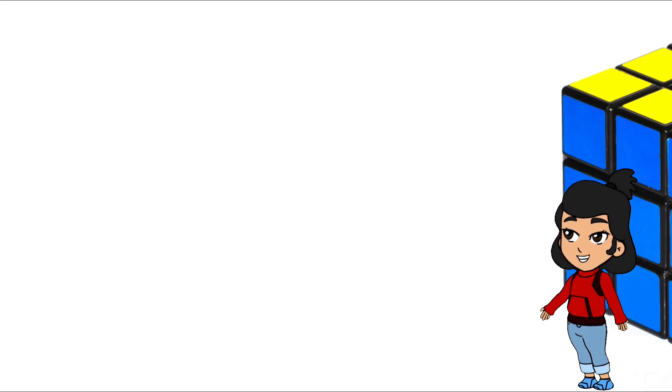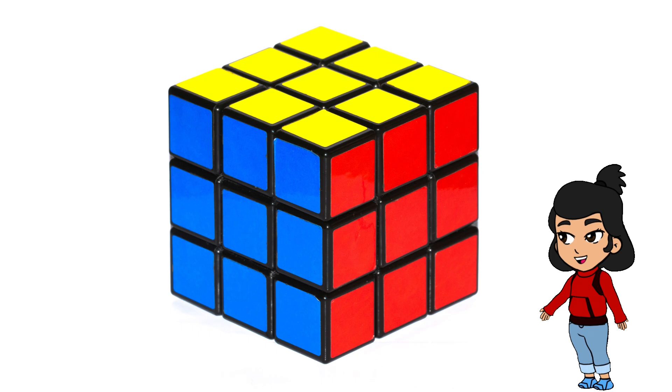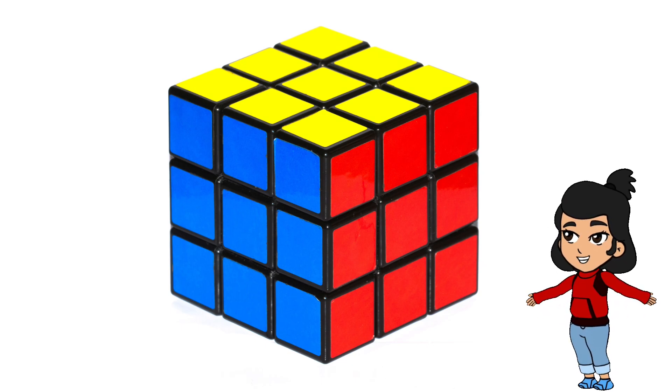Before we start building, let's think about some famous structures. Have you ever seen the Rubik's Cube? It's an example of an amazing hexahedron, just like the one we are going to make today. Hexahedron means a 3D shape with six square faces.